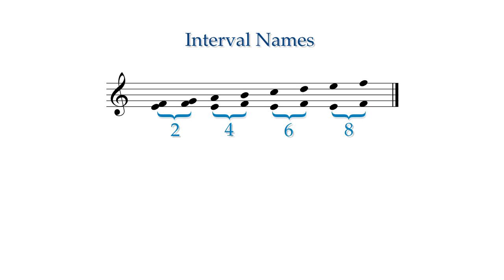With even interval numbers, the notes are always sorted one note on a line and the other note on a space. With odd interval numbers, either both notes are on a line or both notes are on a space.